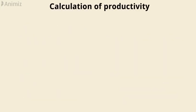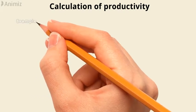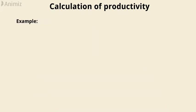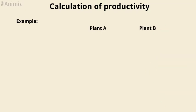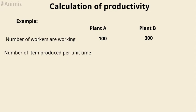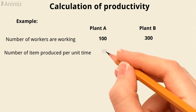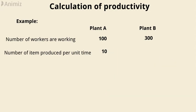How to calculate productivity? Let's understand the calculation of productivity by an example. Take plant A and plant B. Number of workers working at plant A is 100, and number of workers working at plant B is 300. Number of items produced per unit time at plant A is 10, and at plant B is 20.